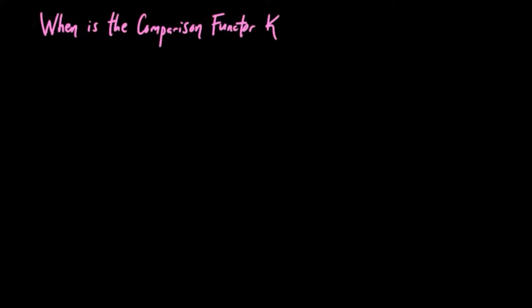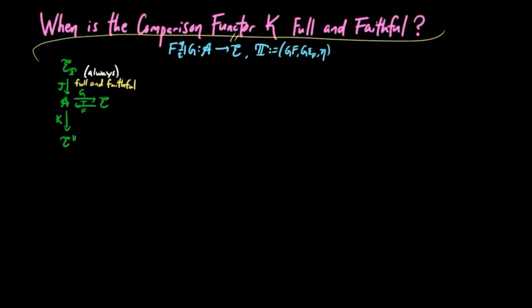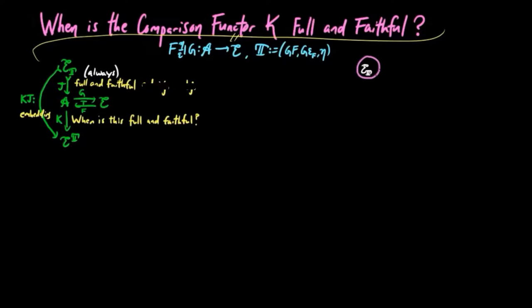In this section, we answer the question: when is the comparison functor K full and faithful? Throughout this section, we fix an adjoint situation FG and set T to be the monad induced by this adjoint situation. The last time we showed that the unique functor J from the Kleisli category to A is full and faithful. We want to know when the comparison functor K from A to the Eilenberg-Moore category is full and faithful. The composition KJ is the unique embedding functor from the Kleisli category to the Eilenberg-Moore category, realizing the Kleisli category as a subcategory of free objects. The Kleisli category is like the indestructible core in each category A in the category of T-inducing adjoint situations.